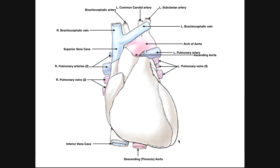The major structures to cover are the vessels coming into or leaving the heart. Veins bring blood into the heart; arteries carry blood away. The first artery is the aorta, which takes blood and delivers it to the systemic circulation from the left ventricle. The left ventricle pumps blood internally out through the aorta.